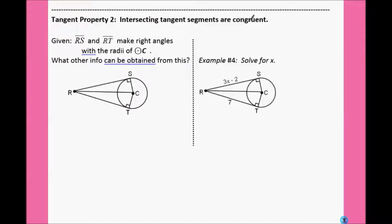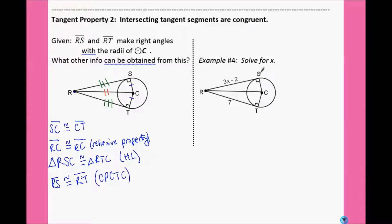Intersecting tangent segments are congruent. Here, we have segment RS and segment RT, they are both tangents intersecting at the same point, so 3X minus 2 would equal 7. Move the 2 to the other side, 3X equals 9, which means X would equal 3.